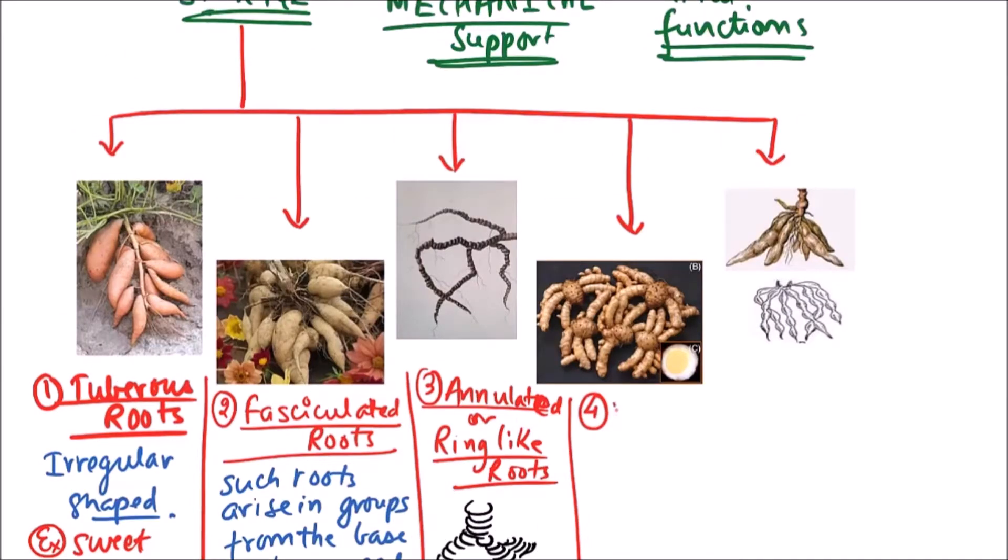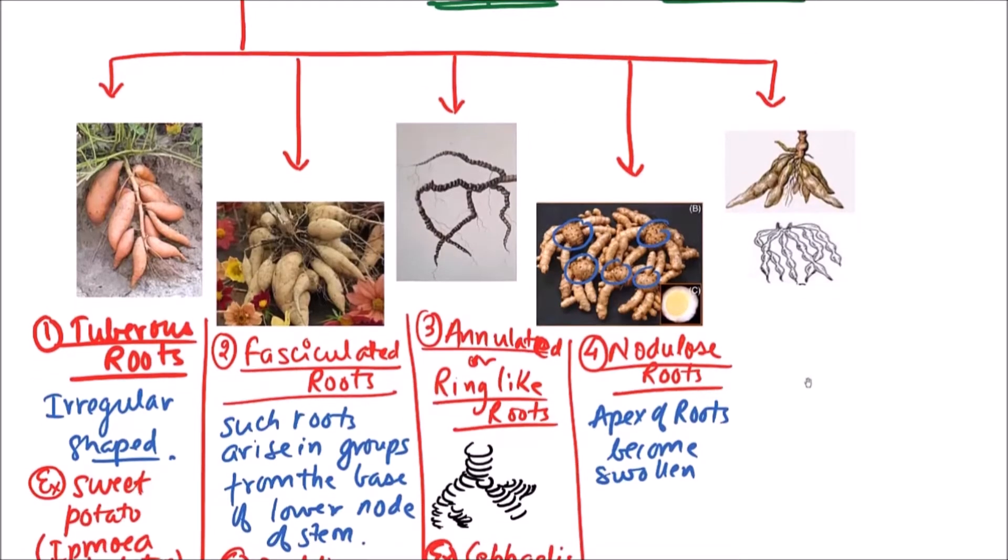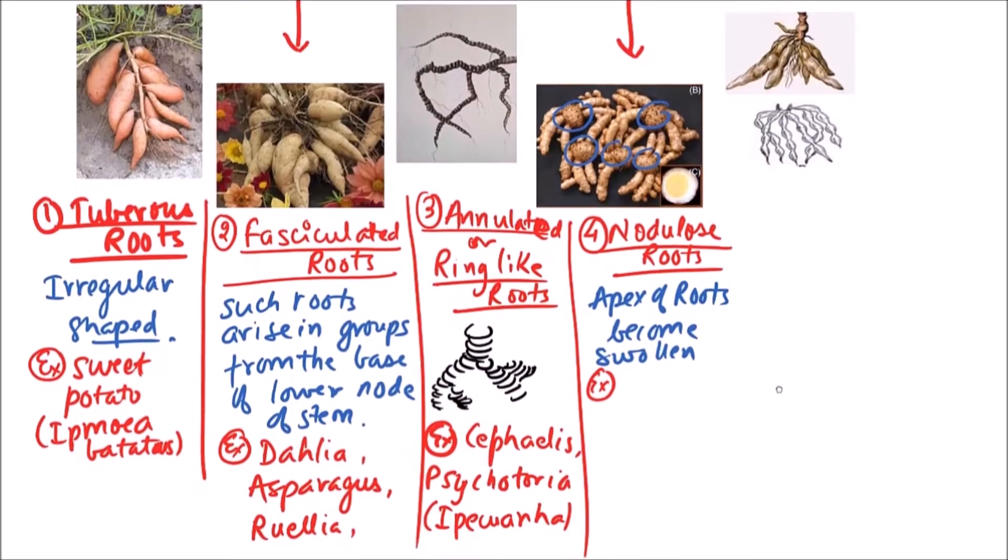In nodular roots, the apex of roots becomes swollen. We can observe such swellings here, a cut section is also given. The examples include Curcuma amanda, which is also known as mango ginger.